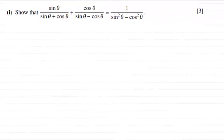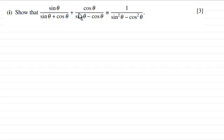Hi there. For this question we're asked to show that sine theta divided by (sine theta plus cos theta) plus cos theta divided by (sine theta minus cos theta) is identical to 1 divided by (sine squared theta minus cos squared theta), for 3 marks.